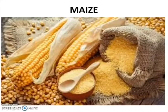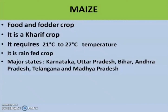The next crop is maize. It is the only crop which is used as both a food crop and a fodder crop in India. It is a Kharif crop. It requires temperature between 21 degree Celsius to 27 degree Celsius, and is also a rainfed crop — meaning it depends on the rain. The major states are Karnataka, Uttar Pradesh, Bihar, Andhra Pradesh, Telangana and Madhya Pradesh.